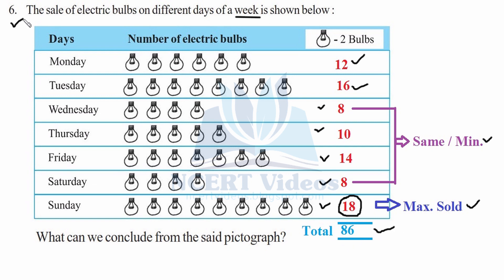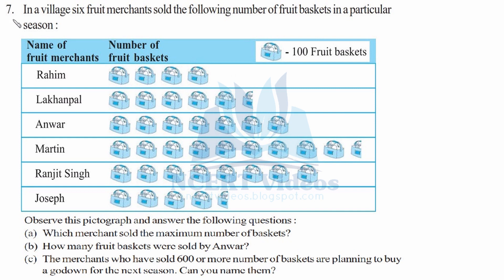Question 7: In a village, six fruit merchants sold the following number of fruit baskets in a particular season. The key is: each picture represents 100 fruit baskets. Observe this pictograph and answer the following questions.